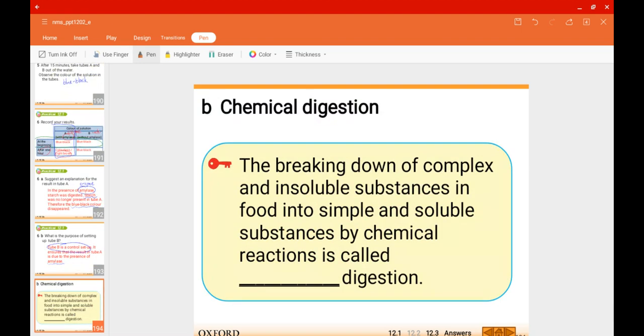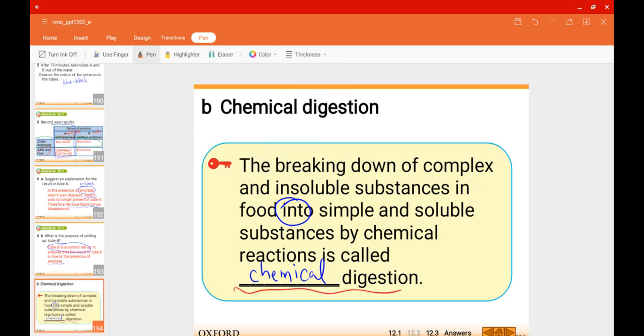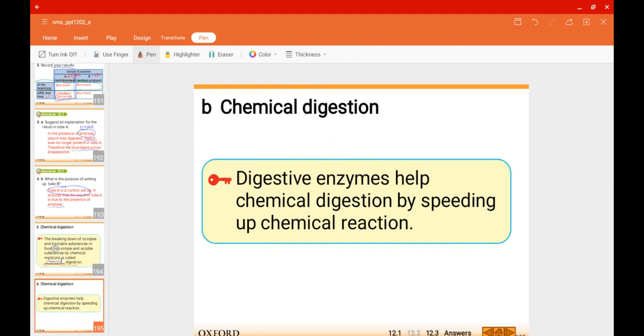To summarize, the breaking down of complex and insoluble substances in food into simple and soluble substances by chemical reactions is called chemical digestion. Digestive enzymes help chemical digestion by speeding up chemical reactions.